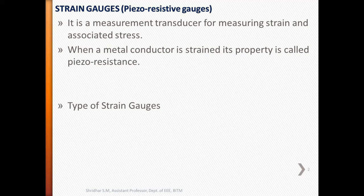It is a measurement transducer used for measuring strain and associated stress. When a metal conductor is strained, its property is called piezoresistance, and strain gauges are also called piezoresistive gauges.